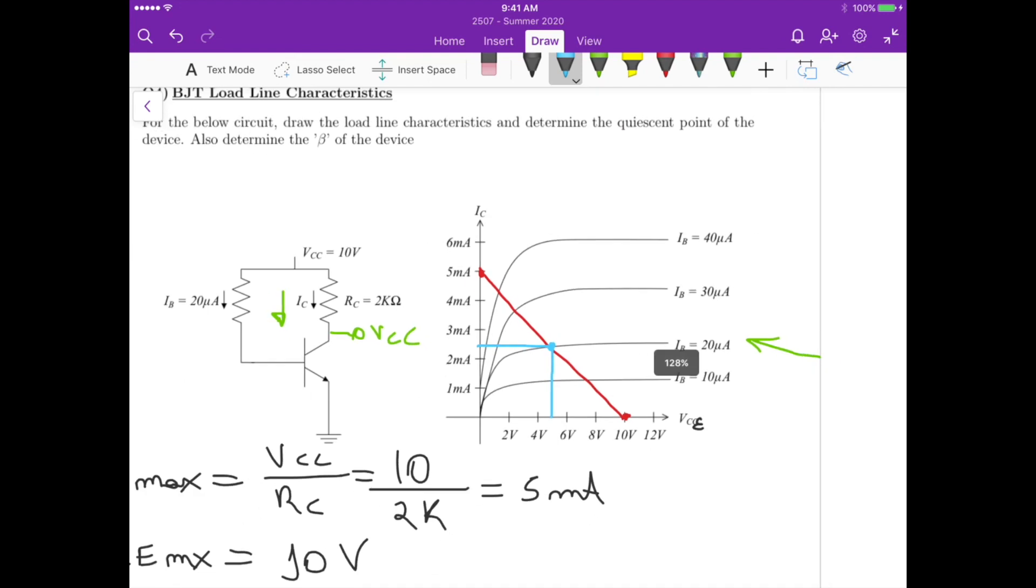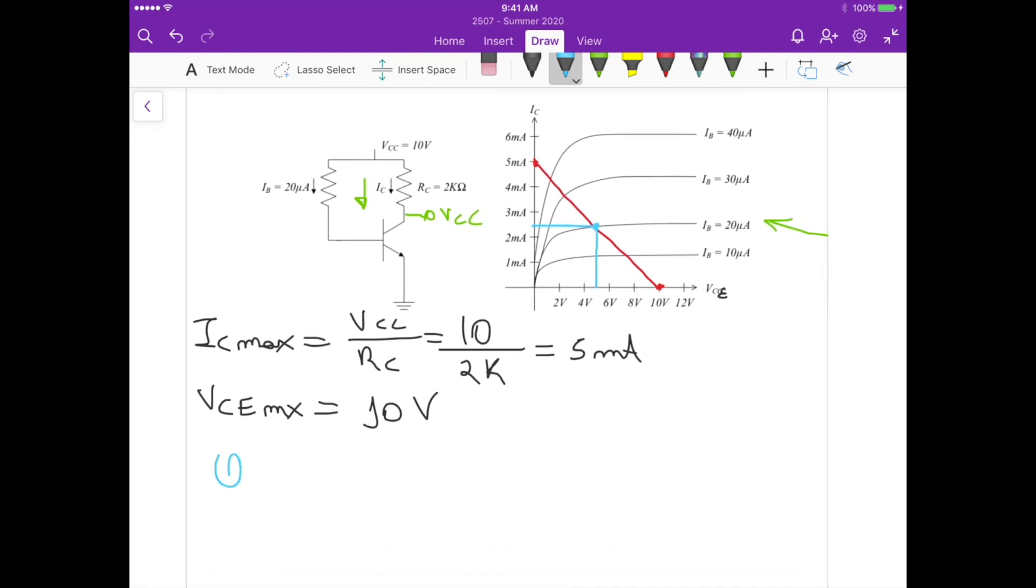Roughly, the quiescent point Q is equal to 5 volts for VCE and something around 2.4 milliamperes. So that's the operating point. That's actually the value of IC that is flowing through RC, and then the potential here that we have between collector and emitter is actually 5 volts.